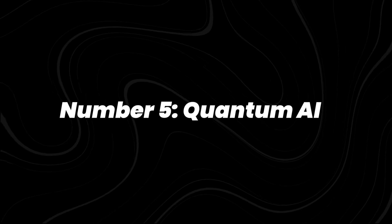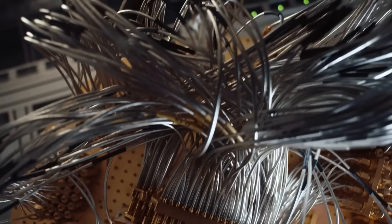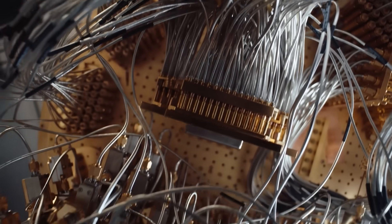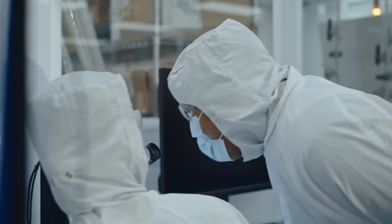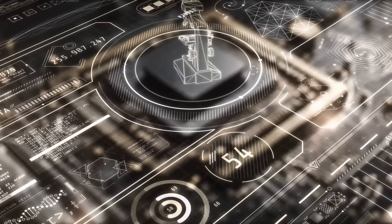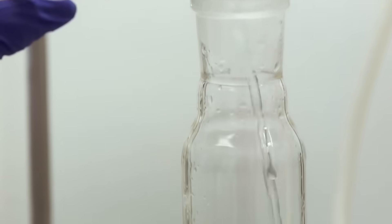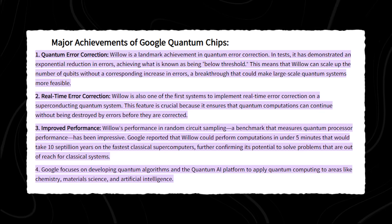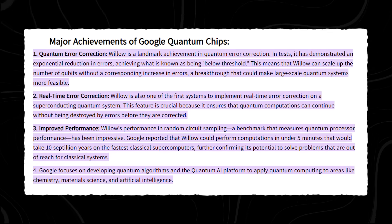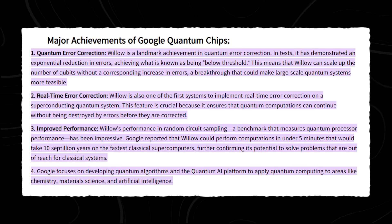Number 5, quantum AI. Quantum AI merges quantum computing's processing power with machine learning's adaptability. Quantum processors can explore many possible solutions simultaneously, making them suited for optimization, drug discovery, and complex modeling. In 2025, IBM, Google, and startups like Quantinuum reported progress in error correction, critical for stable quantum operations.